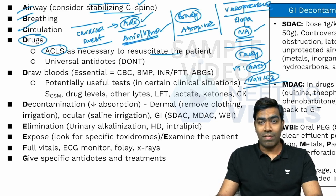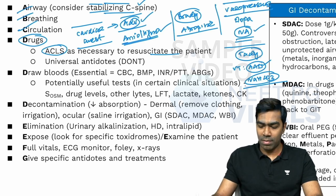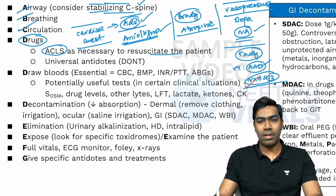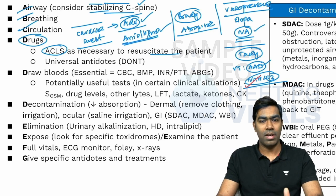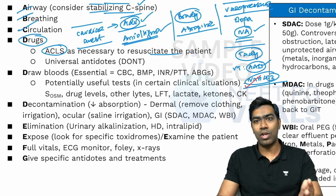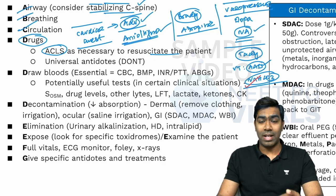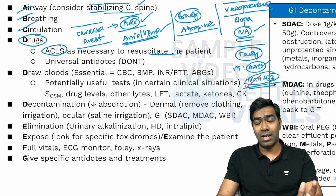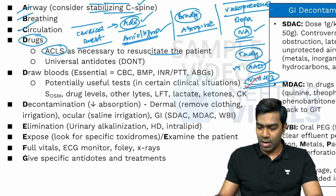Sodium bicarbonate is also a very important drug that can be used in the setting of acidosis. Many toxins can result in significant acidosis, so sodium bicarbonate is very useful. In certain specific scenarios — like tricyclic antidepressant-induced wide QRS or ventricular tachycardia — the next immediate treatment will be sodium bicarbonate. We'll talk about that in detail in a separate session.